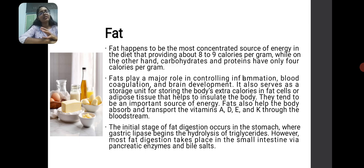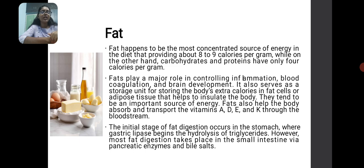Fat is also a macronutrient. It is a concentrated source of energy in the diet — 1 gram of fat gives 8 to 9 kilocalories, whereas 1 gram of carbohydrate or protein gives 4 kilocalories. Fat plays a major role in inflammation, blood coagulation and brain development. It also serves as a storage unit for extra calories in the adipose tissue and helps in absorbing fat-soluble vitamins like vitamins A, D, E and K. The initial stage of fat digestion starts in the stomach where gastric lipase hydrolyzes triglycerides, followed further by pancreatic enzymes and bile salts.